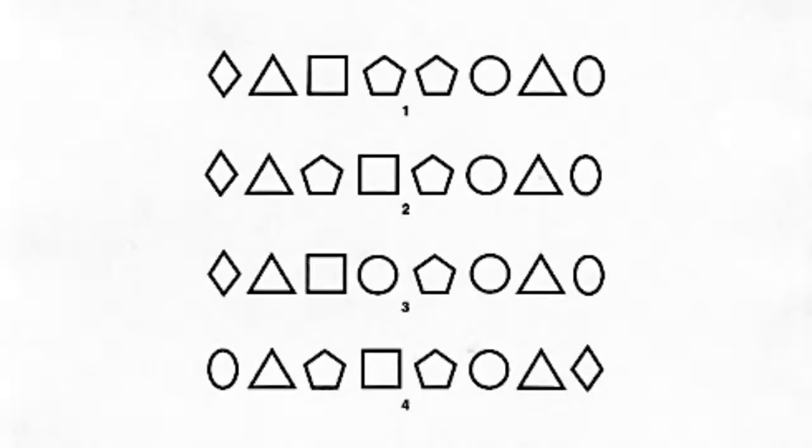In subtest five we're assessing sequential memory, or the ability to remember and recall a sequence of objects or events in the correct order. For this test, the child is shown design sequences for five seconds and then asked to choose the matching design from among several choices. For subtest six, visual figure-ground, we're looking at the ability to identify an object from a complex background or surrounding objects. During this test, the child is asked to find one design among many within a complex background.